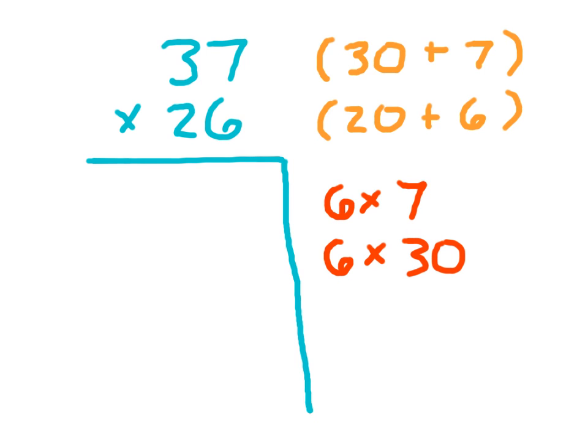And then we multiply that 6 times the 30. If you think about it, what we haven't worked with yet is this 20. And so as part of our product, we're going to multiply 20 times 7, and finally I'll multiply 20 times 30.